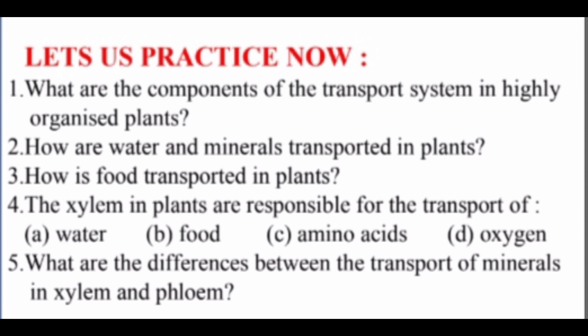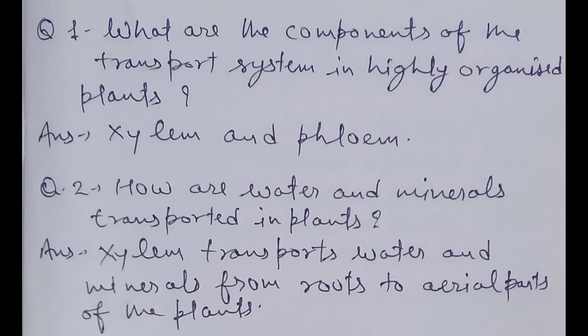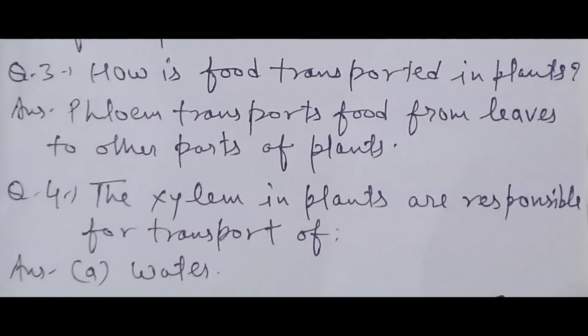Let us now practice some questions. What are the components of the transport system in a highly organized plant? In highly organized plants there are xylem and phloem for transportation of food and water. How are water and minerals transported in plants? Xylem transports water and minerals from roots to aerial parts of the plant. How is food transported in plants? Phloem transports food from leaves to other parts of plants. The xylem in plants is responsible for transport of water.